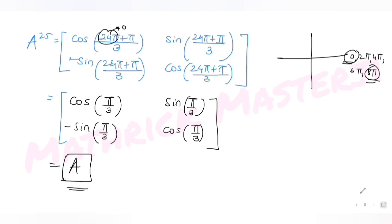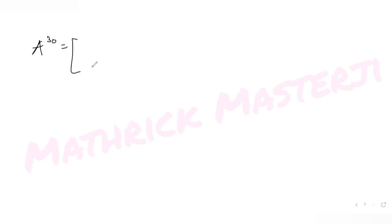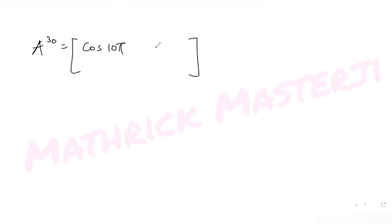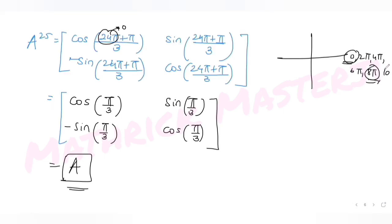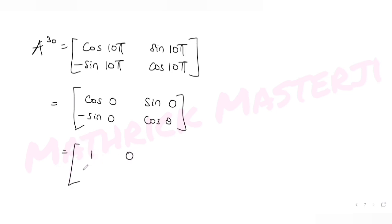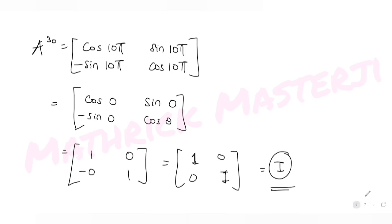For A raised to 30: the argument is 30 × π/3 = 10π. So the matrix becomes [[cos 10π, sin 10π], [-sin 10π, cos 10π]]. Since 10π is a multiple of 2π, it is equivalent to angle 0: cos 0 = 1, sin 0 = 0. So A raised to 30 equals [[1, 0], [0, 1]], which is the identity matrix I.